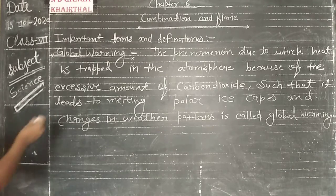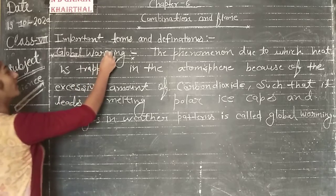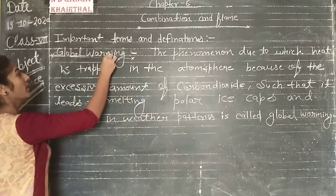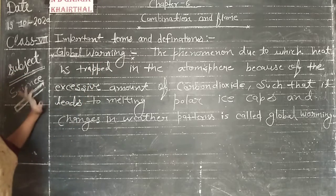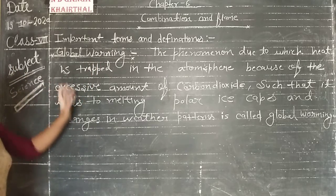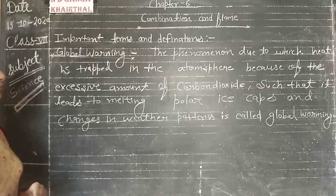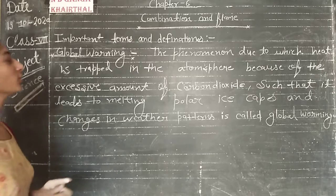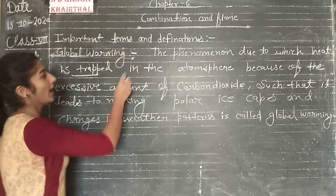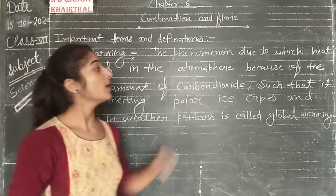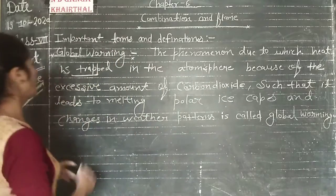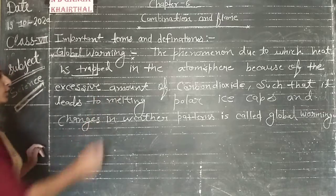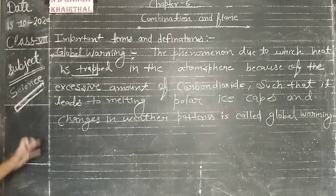Global warming. Global warming is the phenomenon due to heat being trapped in the atmosphere, because of the excessive amount of carbon dioxide.